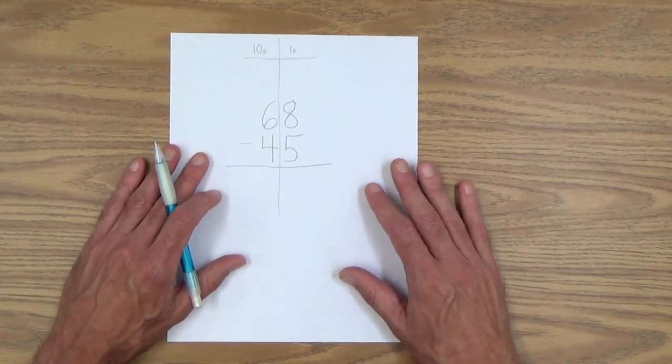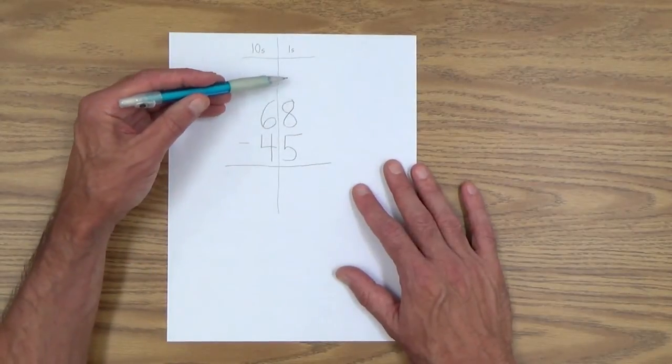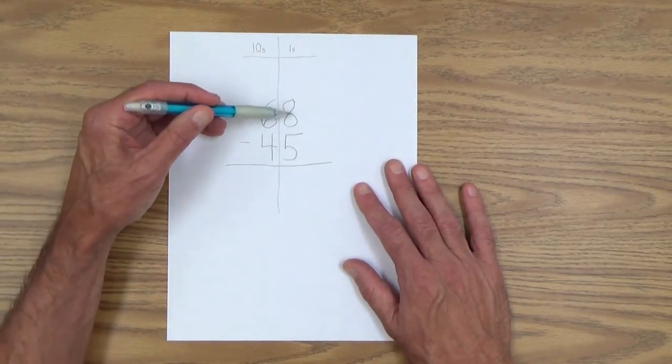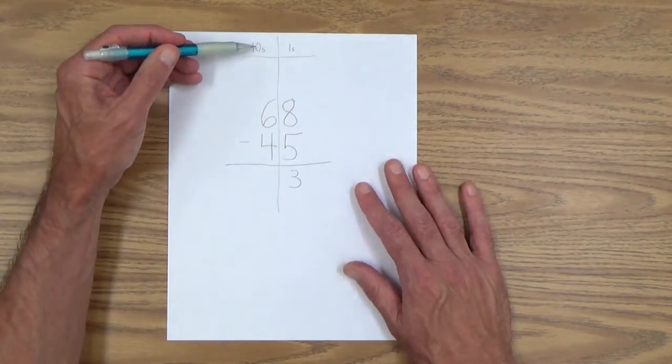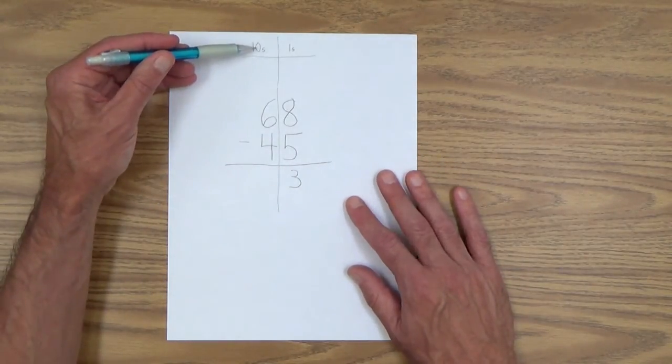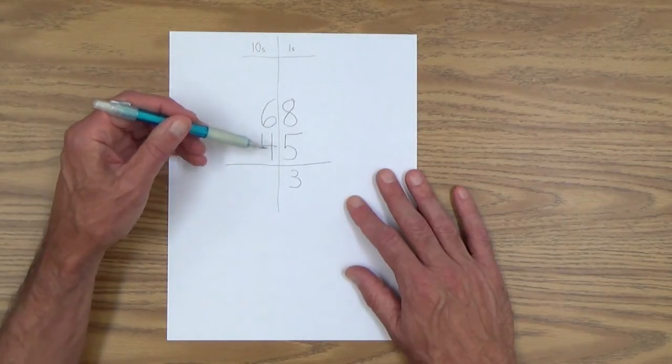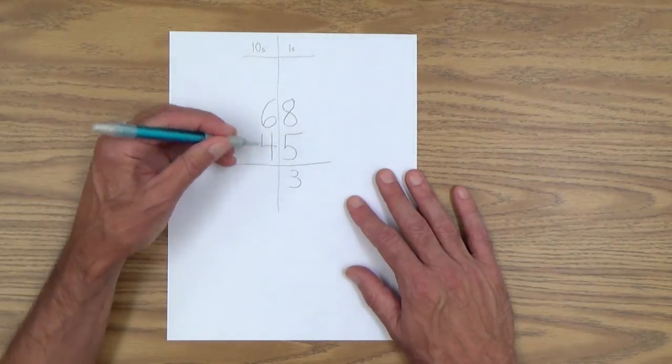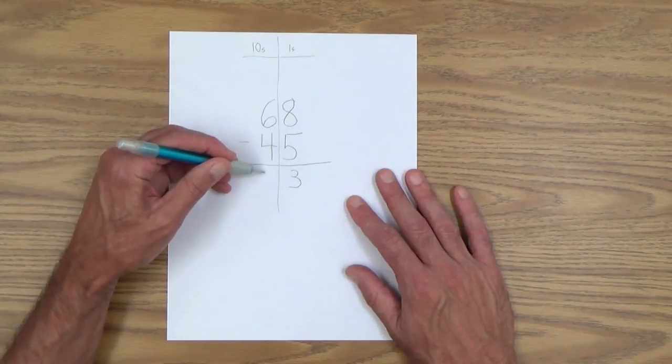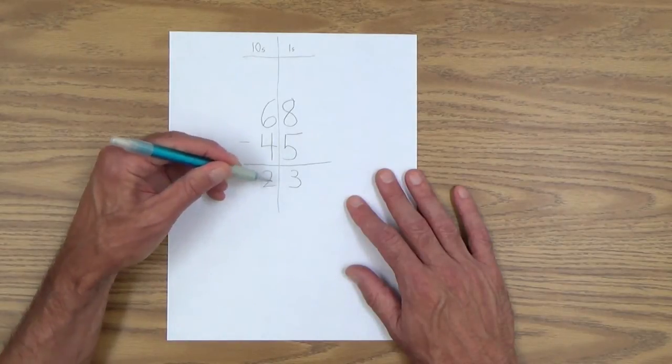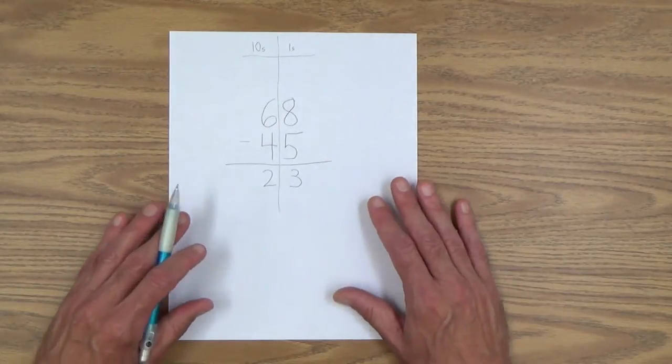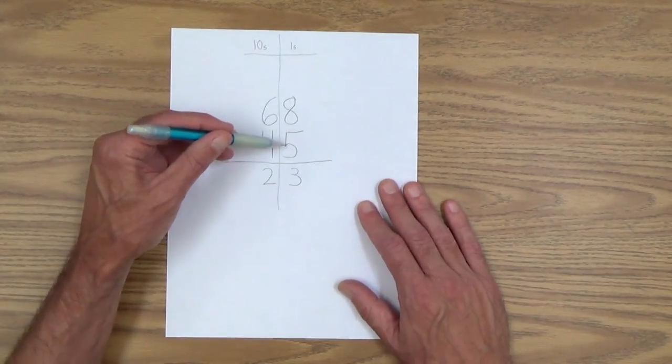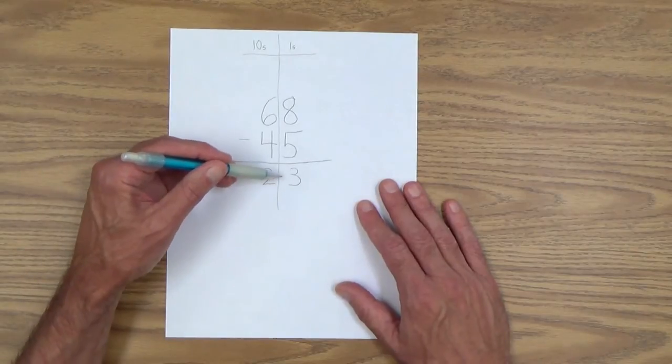All right. And of course, you know that step one is we subtract the numbers in the ones column. Eight minus five, three. And then we go over and subtract the numbers in the tens column. Six minus four, or six take away four equals two. And then she can read the whole problem and understand the difference. 68 minus 45 equals 23.